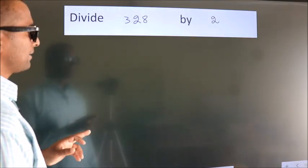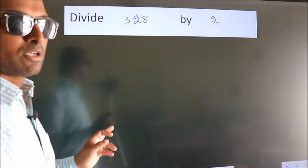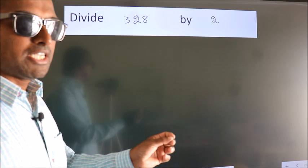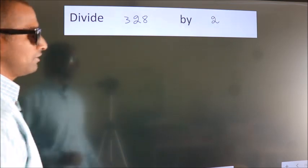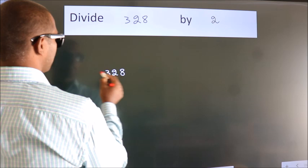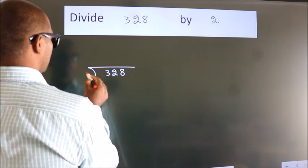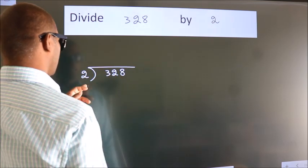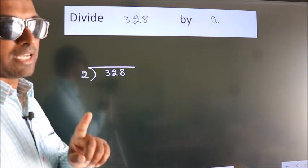Divide 328 by 2. To do this division we should frame it in this way: 328 here, 2 here. This is your step 1.